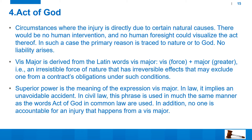Defense number four is act of God. In circumstances where the injury is directly due to certain natural causes, there is no human intervention and no human foresight could visualize the act. Act of God is basically act of nature — an act caused by natural forces beyond human imagination or human control. Examples include hurricane, flood, tsunami, twisters, earthquakes, landslides, snow slides. In such a case, the primary reason is traced to nature and no liability arises. Vis major is derived from Latin — vis means force and major means greater. Greater force by nature is called vis major, also called act of God — an irresistible force of nature with irreversible effects that may exclude one from a contract's obligation.